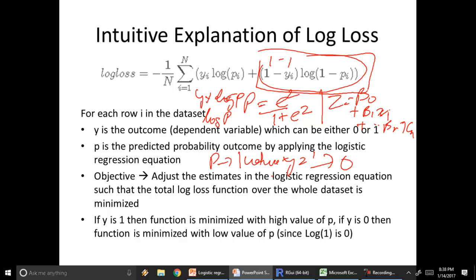Similarly, if y equals 0, that means y is 0. In this case, this part of the function becomes 0 and we are essentially looking at this part, which is 1 into log of 1 minus p. In this case, if p, the probability approaches 0, this whole function again starts to approach 0.